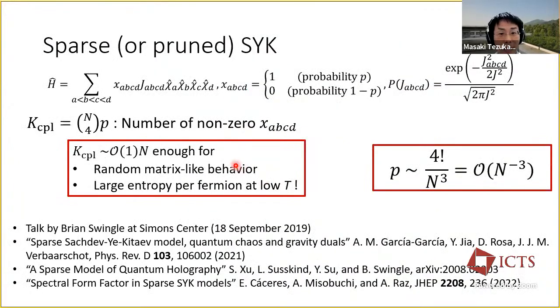So far, I have talked about the original SYK model with Gaussian random all-to-all 4-fermion couplings. Now, let us start looking into how we can simplify this model, retaining the random matrix-like energy spectrum statistics. In 2019, Brian Swingle proposed a sparse version of the SYK model in which the coupling is a Gaussian random at probability p and 0 otherwise. If the number of non-zero couplings, K_cpl, is too small, some products of fermions commute with the Hamiltonian and there will be no random matrix behavior. Surprisingly, if the number of independent terms reaches around n, random matrix-like behavior appears and non-zero entropy per fermion at low temperatures is observed, which is expected for models holographically corresponding to black holes. This corresponds to the probability of non-zero couplings on the order of n to the minus third. So this is very, very sparse.